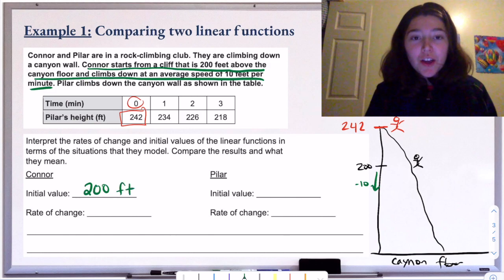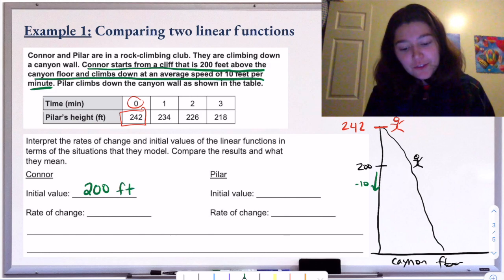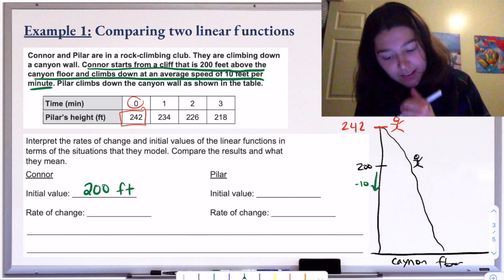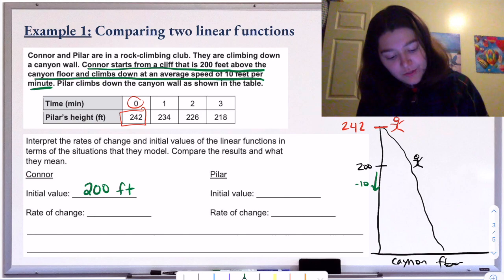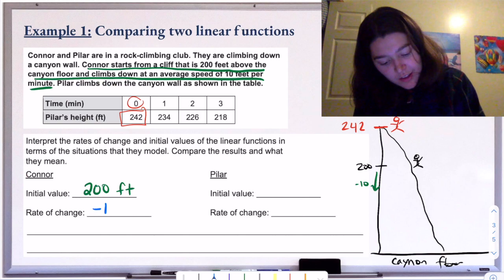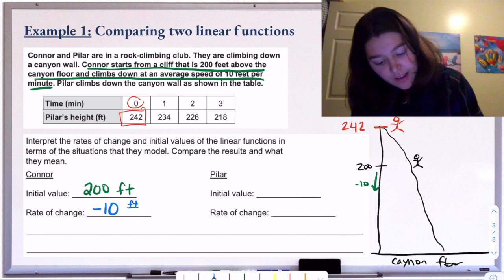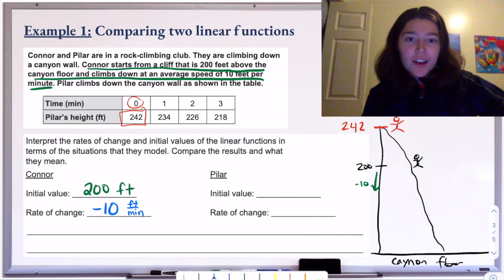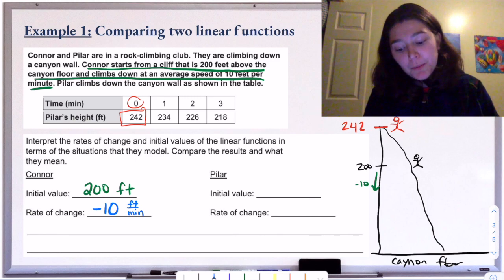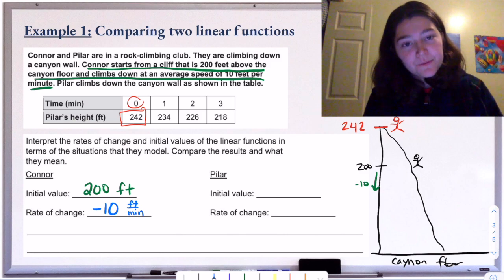Connor is 200 feet above the floor when he begins. The rate of change tells us the change in feet per minute. He's climbing down at an average speed of 10 feet per minute, so that's our rate of change. We make it negative because it's going down — if it were positive 10, he'd be climbing up. Since he's climbing down the cliff, the rate of change is negative 10.